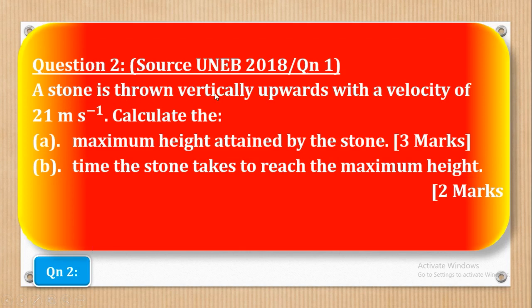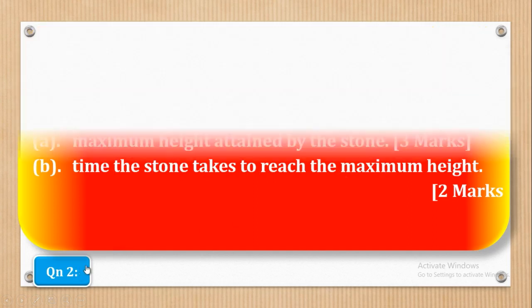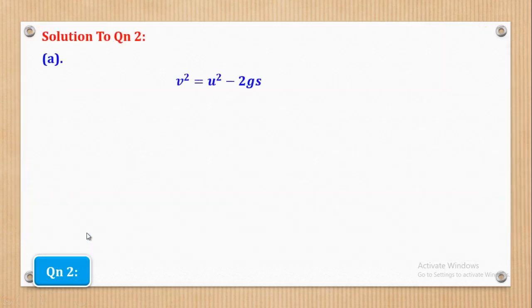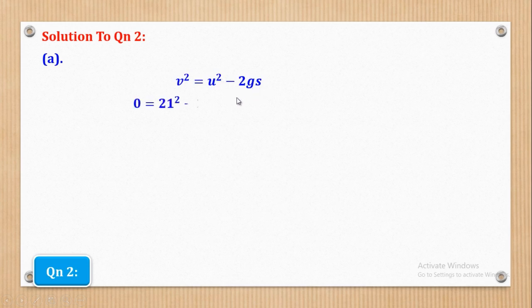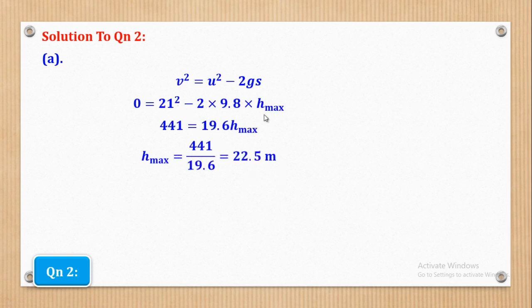Now we go to question 2. A stone is thrown vertically upwards with a velocity of 21 meters per second. For part A, they want the maximum height attained. The final velocity at maximum height is 0, initial velocity U is 21, G is 9.8. Substituting into the third equation and solving gives H max equal to 22.25 meters.